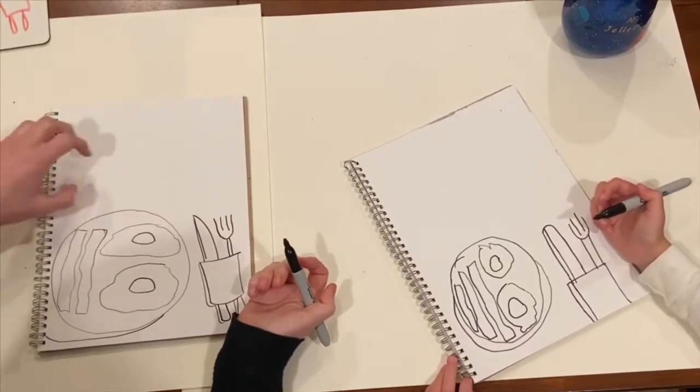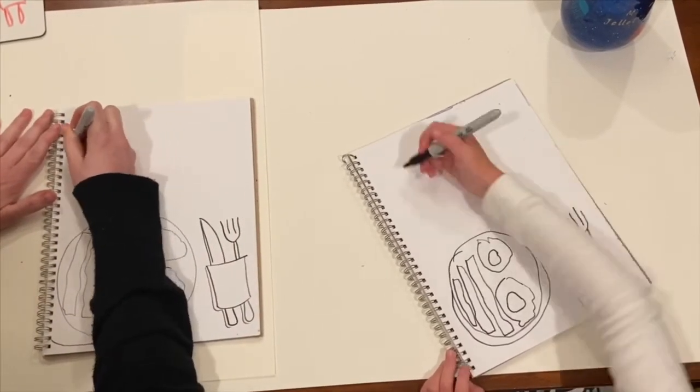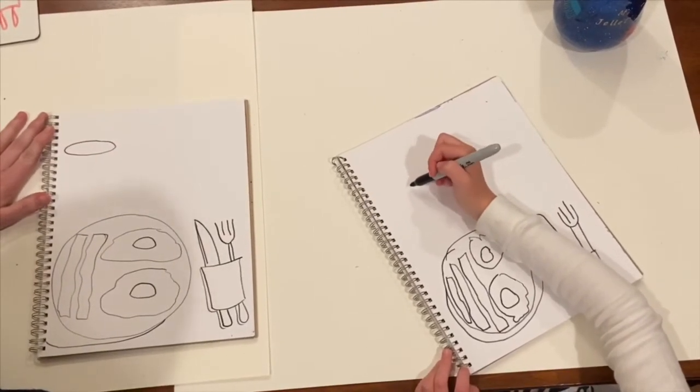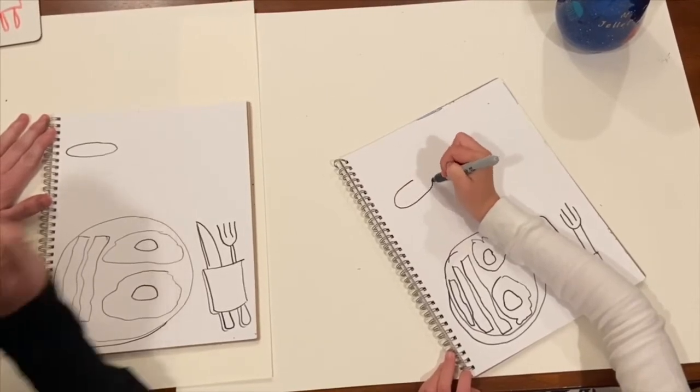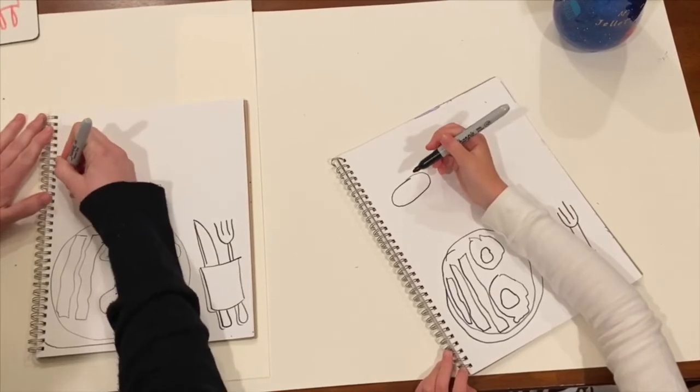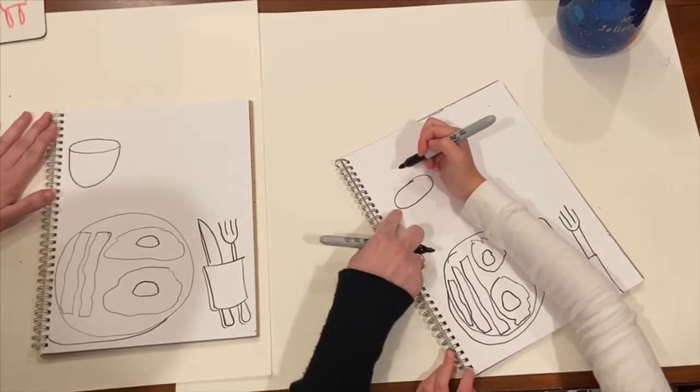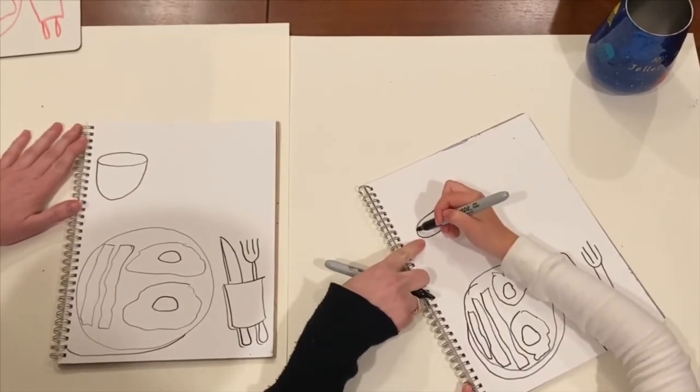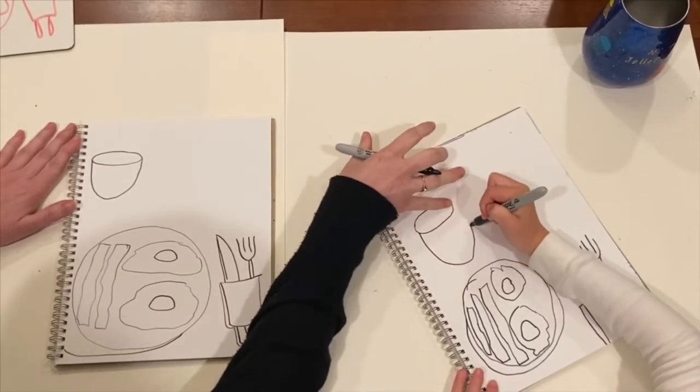Now, the next thing I'm going to make is a mug. I'm going to jump up and start with an oval. Next, I'm going to make a U so it connects on each side. So start here, make a U that goes all the way to the other side.